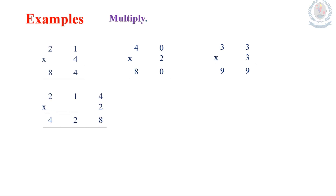Check this example: 214 multiplied by 2. We have 3 numbers, meaning 3 places. First, multiply the 1's place: 2 times 4 is 8. Then the tens place: 2 times 1 is 2. Finally, multiply the 100's place — the number is 2, so 2 times 2 is 4. The product is 428.